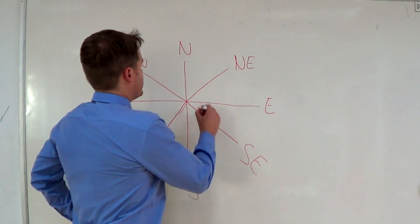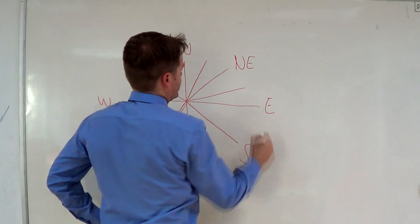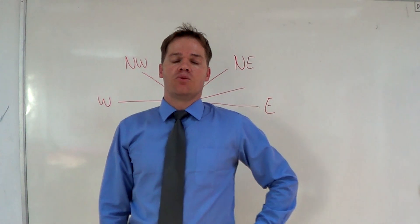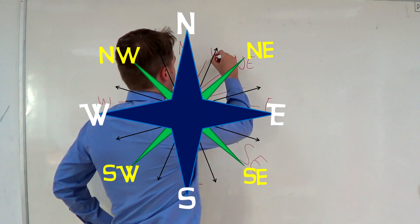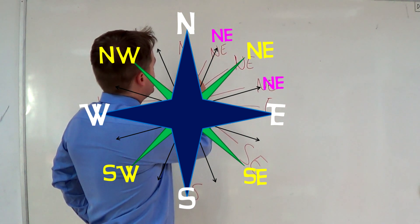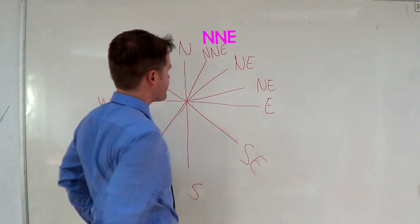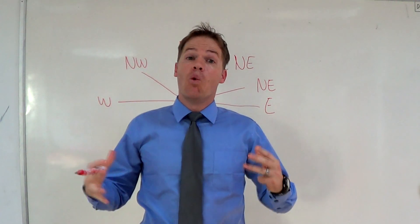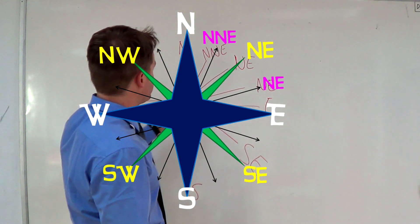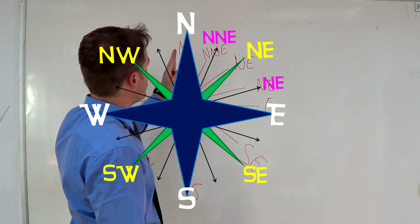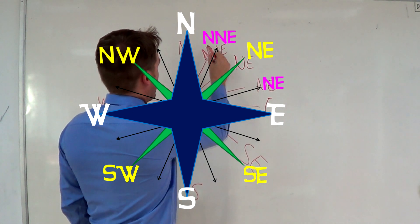Now we are going to look at what is exactly between north and north-east, and between north-east and east. What I always tell my students is to first write north-east at each one of these points. Between north and north-east we have north-north-east. This direction here is closer to north than it is to east, so we put a north in front of north-east.